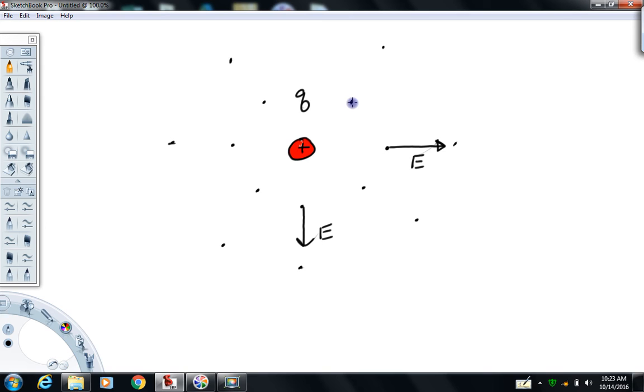So I can actually go ahead and draw a bunch more electric field vectors. This one's going to be this way. This one's going to be this way. Every one of these is going to point away from our charge.